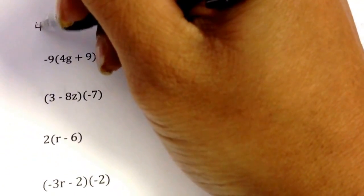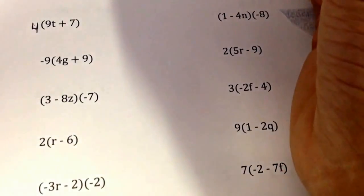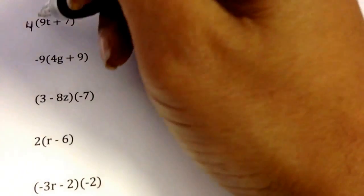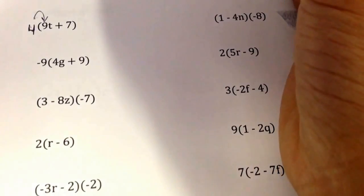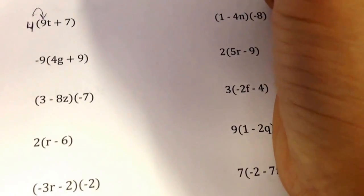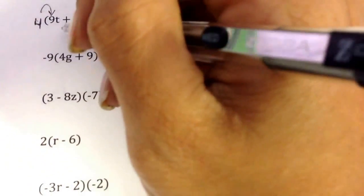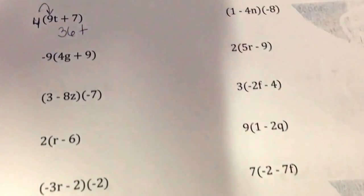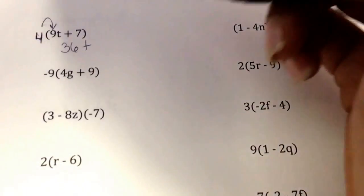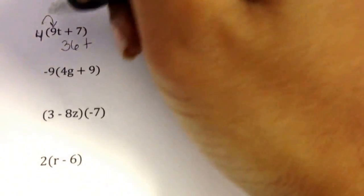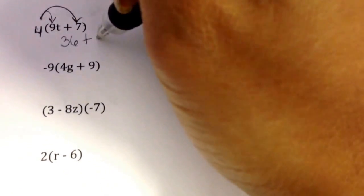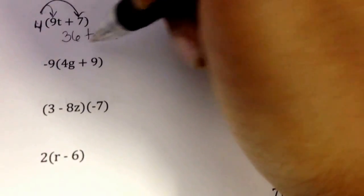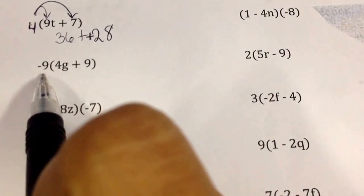We have four groups of 9t plus 7. If I have four groups of 9t, that's like multiplying 4 times 9, so I have 36t. And four groups of 7 is just like saying 4 times 7 or 28, so 36t plus 28.